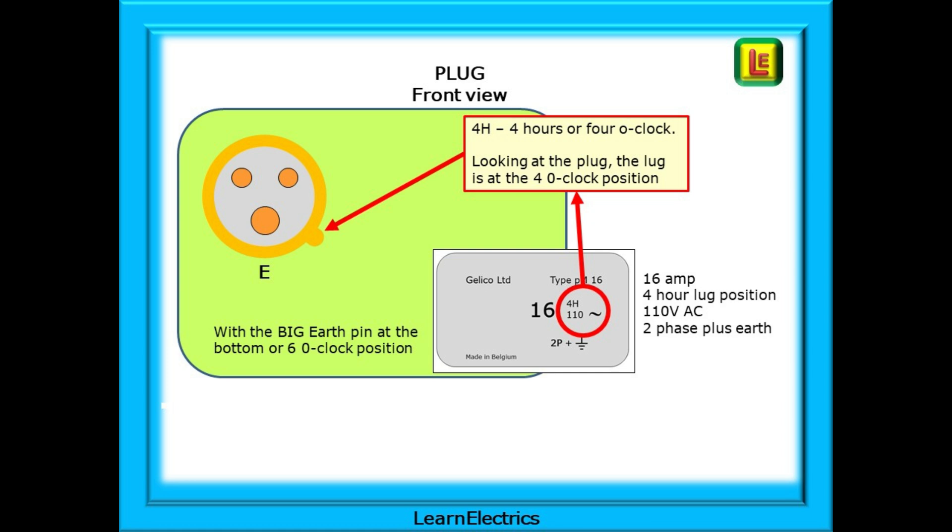Plugs and sockets will come with information labels attached or printed onto the casings. In the red circle here we can see the letters 4H. The 4H tells us this means four hours or four o'clock. When looking at the plug with the big brass pin at the bottom, the lug should be at the four o'clock position as shown. This label will also tell us that this is a 16 amp plug designed for 110 volts AC use, and it's for two phase plus earth supplies.